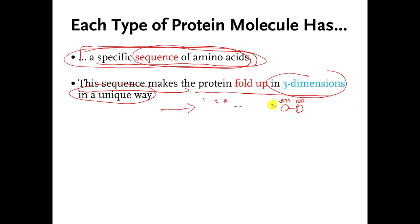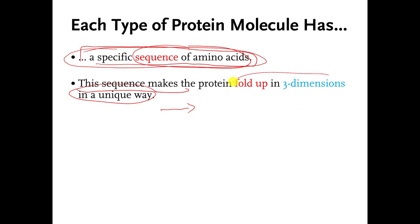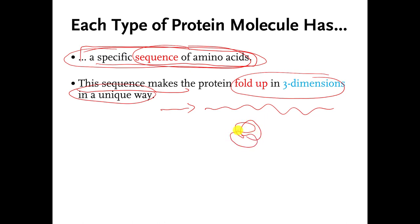In reality, what happens is the order that you connect the amino acids in makes every protein molecule fold up in 3D in its own special way. So even though I have 100 amino acids and you might think they're like a long string, what ends up happening in real life when the protein molecule gets made is it might fold up in its own special way. This is my horrible way of showing you the protein molecule folded up properly.